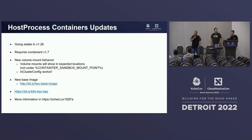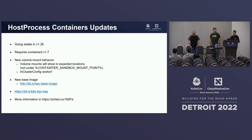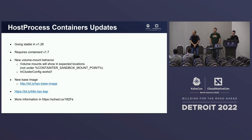Next is an update on host process containers. We are going stable in this release, 1.26. There is some new functionality that will require containerd 1.7, but everything is fully backwards compatible. One big highlight is that volume-on behavior is now much more as expected with containers, and you can use all the in-cluster clients and configs. We also now have a slim base image of about 25 kilobytes for building host process containers, which is extremely small for Windows containers. There's a link to the KEP and the other talk right there.